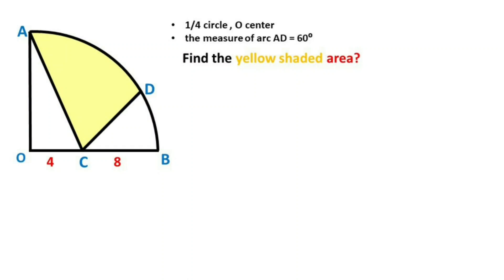Hello everyone. In this video, we have one quarter circle with O as the center. The measure of arc AD is given as 60 degrees, and we need to find the yellow shaded area.